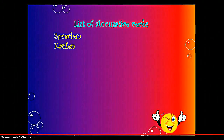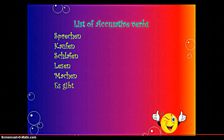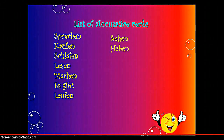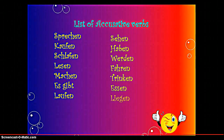Kaufen — to buy, also an action. Schlafen — to sleep. Lesen — to read. Machen — to do. Laufen — to walk. Sehen — to watch, to see. Haben — to have. Werden — to be. Fahren — to drive. Trinken — to drink. Essen — to eat. And liegen — to lie. So all these verbs are considered as Accusative verbs.